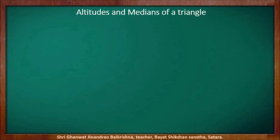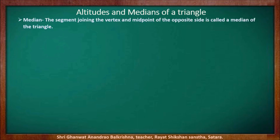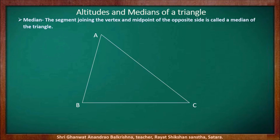Hello students, we are going to learn medians of a triangle. Let us first understand what is the meaning of medians. Median — the segment joining the vertex and midpoint of the opposite side is called a median of that triangle. We know that any triangle has three vertices. Let us understand the meaning of median with the help of a diagram.